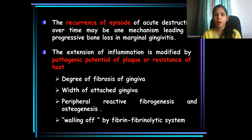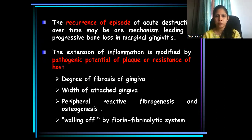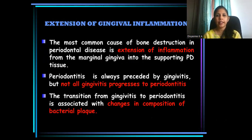We know that periodontal disease has got both periods of rest as well as periods of destruction. Alveolar bone destruction occurs mainly during the active periods of periodontal disease. Gingival inflammation extends to the underlying periodontium through different ways, and a number of factors influence this pathway of gingival inflammation to the underlying bone.